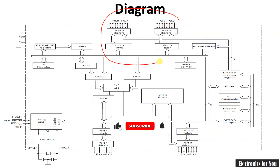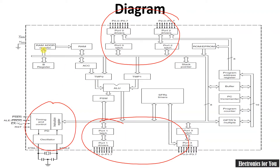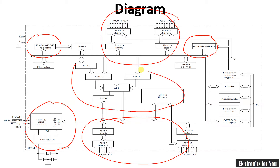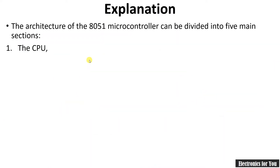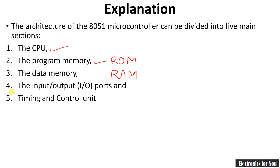If you want to divide this architecture into blocks, we can divide it into ports, timing and control unit, RAM and ROM — that is data memory and program memory respectively — and most importantly the CPU along with its different registers. So the 8051 can be divided into: CPU, program memory (ROM), data memory (RAM), input/output ports, and the timing and control unit.